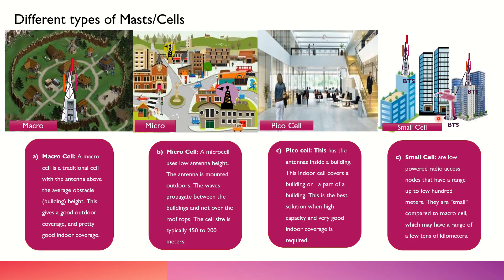Along with that, we have small cells, which are a further smaller version of a micro site, covering an even smaller area that is not being served by the bigger or macro sites. Small cells cover just a few meters and are used, for example, where there is a shadow zone where coverage is not reaching from the larger masts or macro sites.